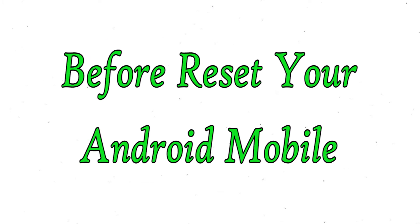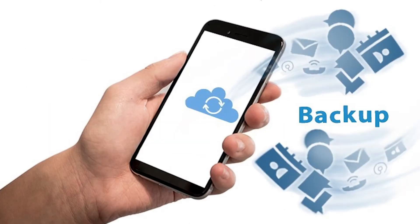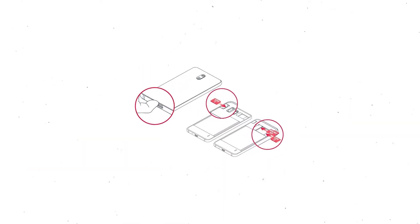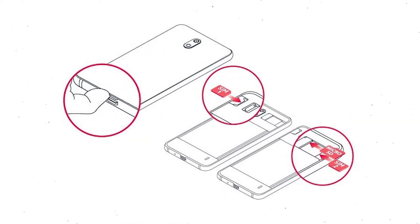Before resetting your mobile, charge it if the battery is less than 50%. Make sure that the data on your device is backed up so you do not lose valuable photos or documents. Reset deletes all your mobile data, so back up all important data and remove your SIM and SD card.